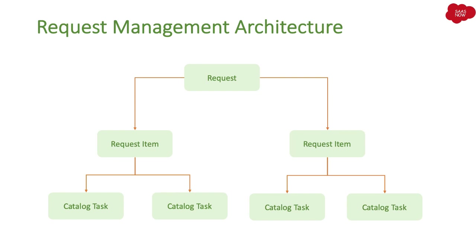Service catalog is a request management module where users can request different items and their requests will be processed and assigned to different teams. Let me take the example of Amazon: when you go to amazon.com, you have multiple products. You add different products to your cart, click checkout, and pay. Let me use this scenario to explain the architecture.